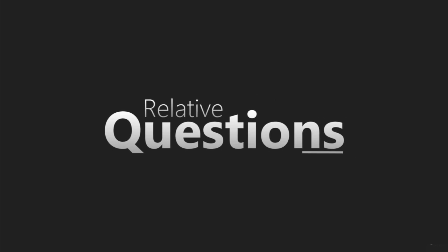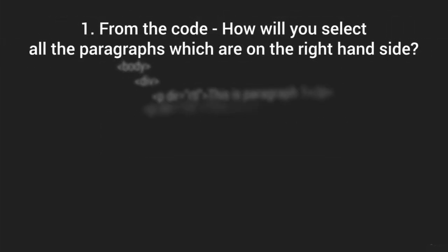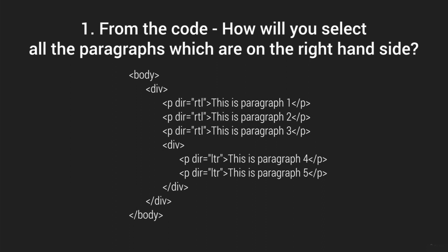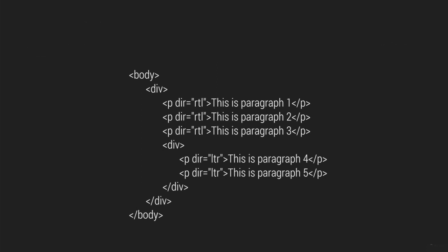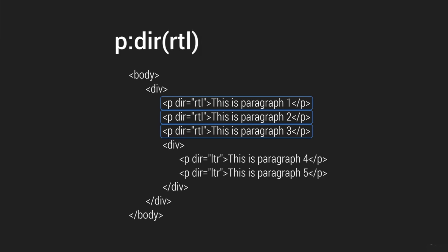Now for a relative question: from this code, how will you select all paragraphs on the right-hand side? To select all paragraphs with right-to-left direction, you write 'p:dir(rtl)' — first 'p' for the paragraph selector, then colon, then 'dir', and in brackets 'rtl'. This selects all paragraphs where direction equals RTL. Then you open curly brackets and write the style you want.